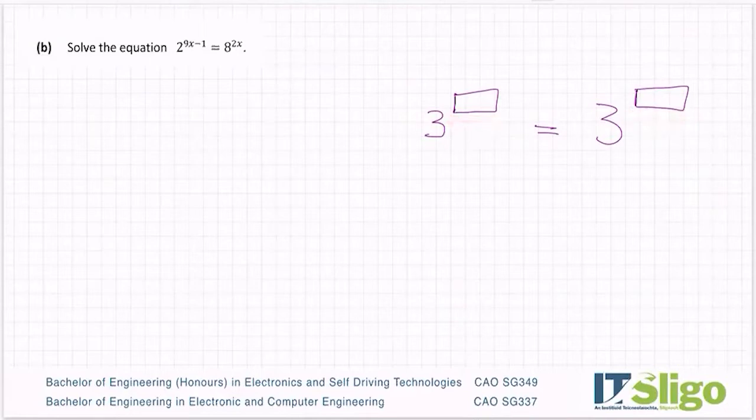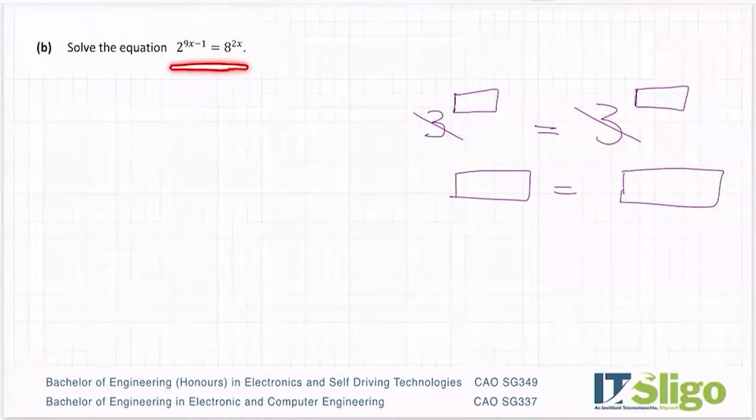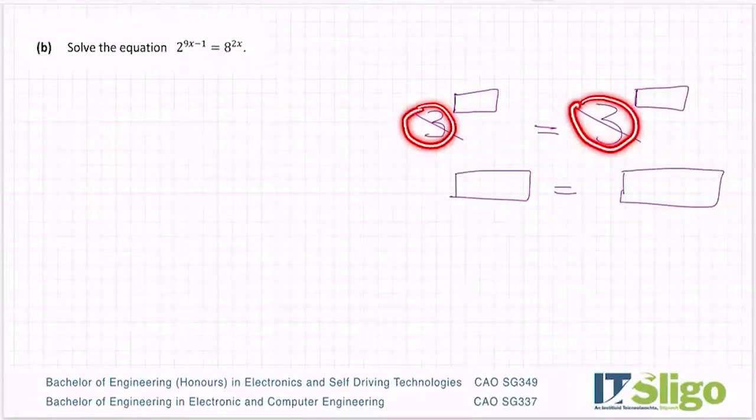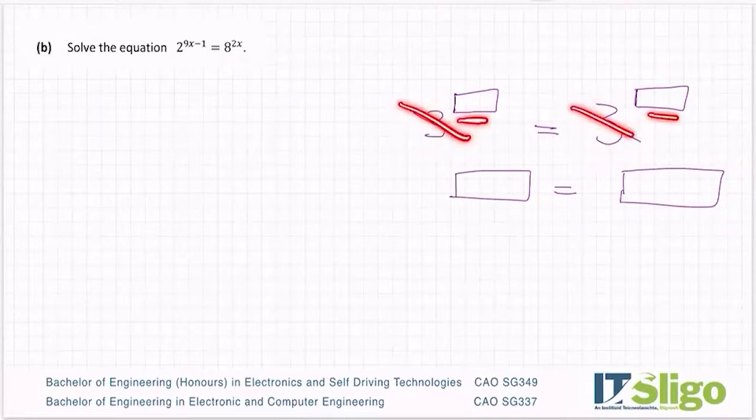So if the base numbers are equal, which they are, they're 3, then the only way the left hand side of that equation equals the right is if their powers match. So in that case, you can drop the base numbers because you know they already equal and you can let their powers equal each other.